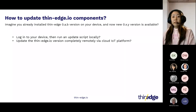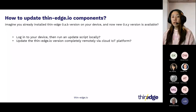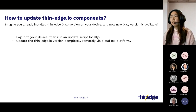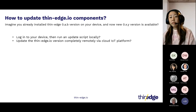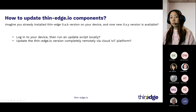As a first example, let's use Cumulocity IoT and update the Thin Edge Debian package over the air. If you are not familiar with Cumulocity IoT, let me explain it very briefly. Cumulocity IoT is a Cloud IoT platform that has a feature to manage installed software on connected devices. Let me start the first demo now.